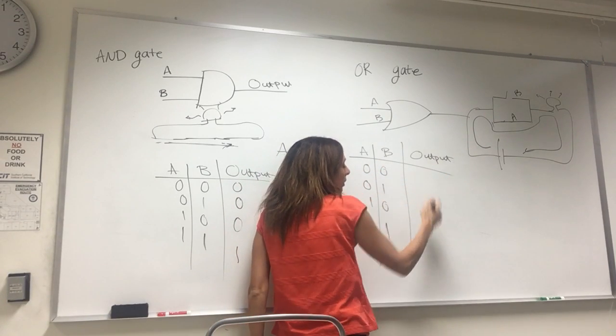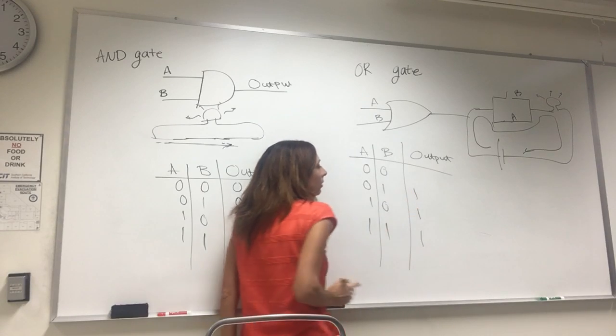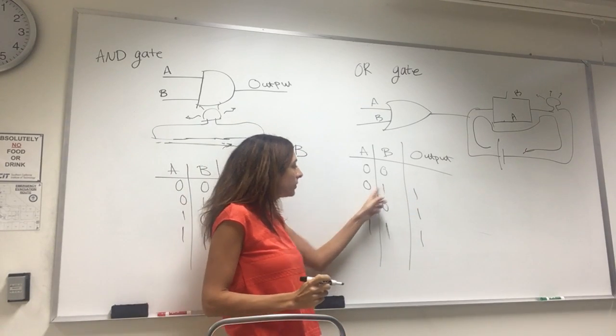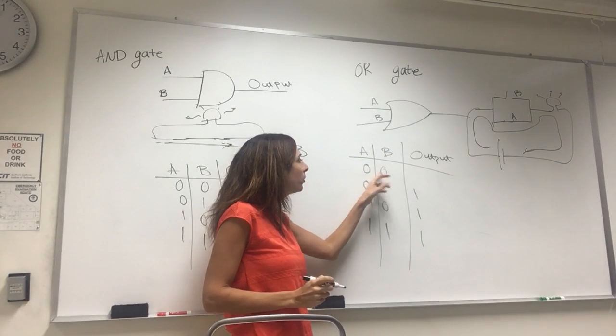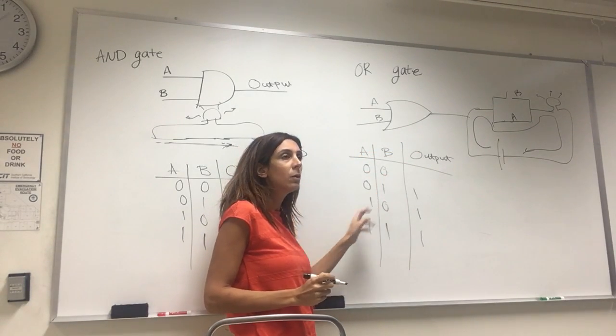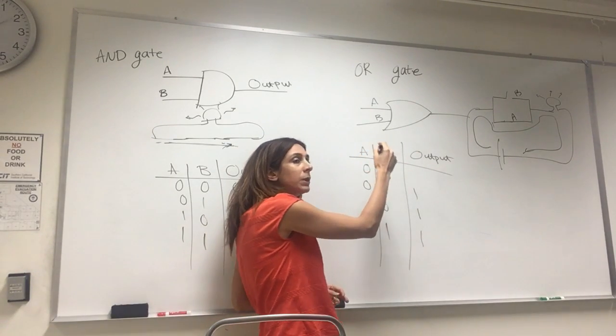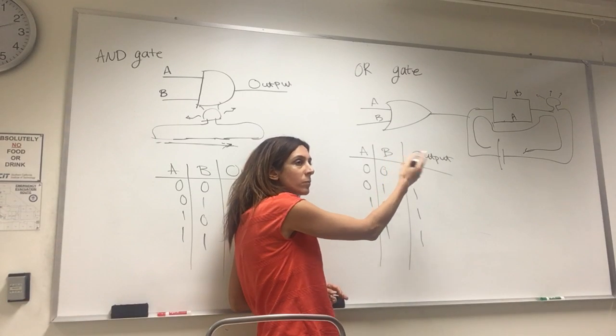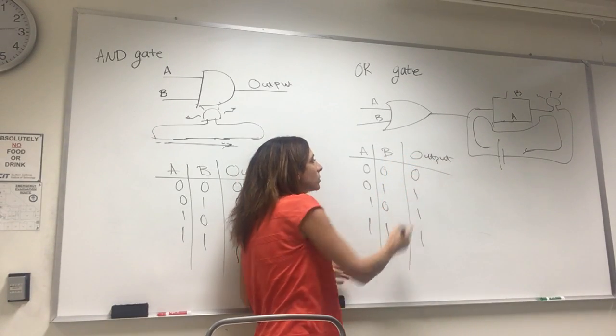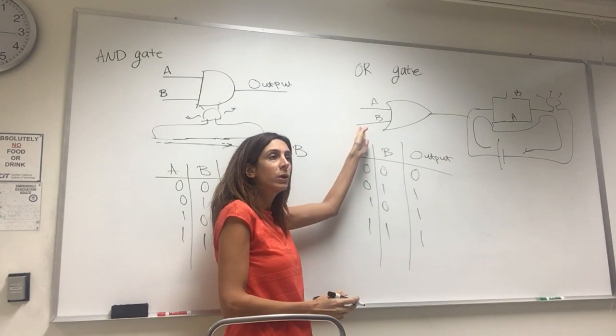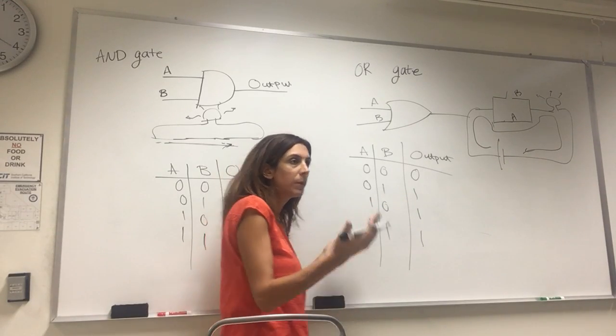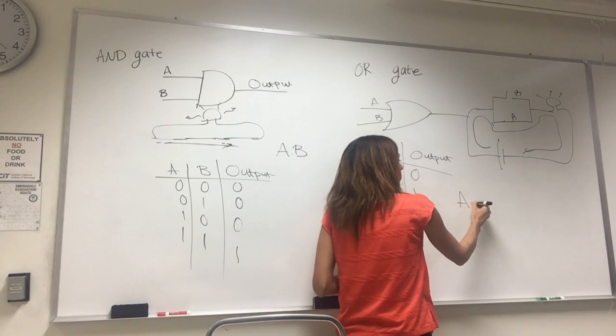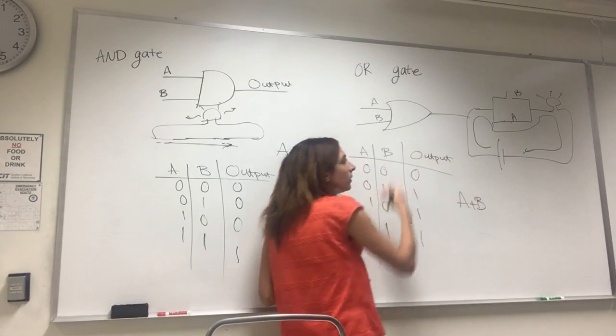I always have current going through when I have one of the switches closed or both of them. When both of them are open, zero, zero, then my output would be zero. So this is the truth table for OR gate. What is the Boolean expression for OR gate? A plus B. So whenever you see A plus B, that means you have an OR gate.